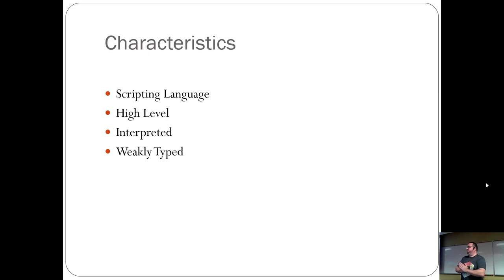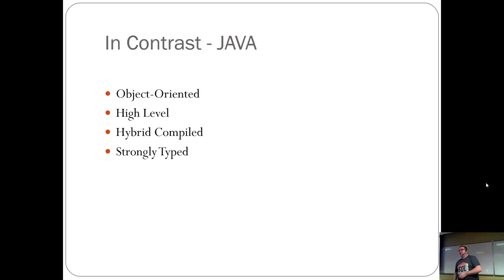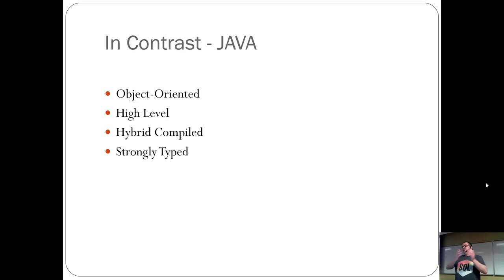In contrast to Java, which is object oriented, strongly typed, and hybrid compiled to bytecode, shell scripting is weakly typed. Java compiles to bytecode which is then executed — as opposed to C++ which compiles straight to binary. Here are some simple script examples. One called 'who's on' outputs the current date and time, lists currently logged-in users, and runs the uname command — the same as if you typed all those commands one after another, but it just runs them for you.